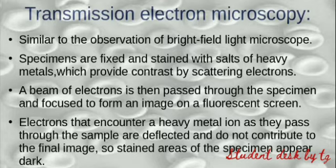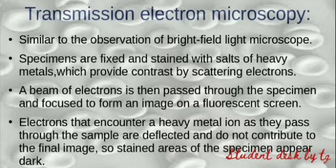Because electrons are deflected by heavy metal stained areas, those areas will appear dark in the final image — the electrons deflect back and do not contribute to the image. So our stained areas of the specimen will appear dark.